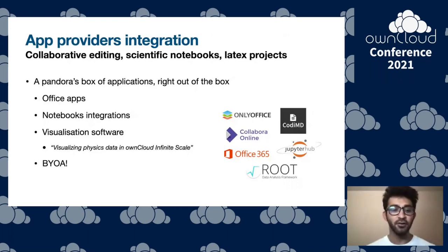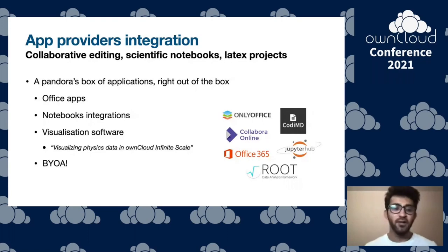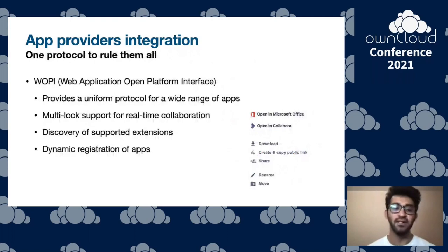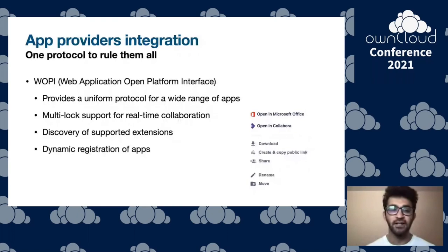A colleague of mine, Jan Maria, has also worked on integrating ROOT.js with OSIS, which allows visualizing and making sense of physics data. If you missed this presentation from the workshop yesterday, please check it out once it's uploaded. You can just bring your own app — we made it ridiculously easy to write bindings for new applications. This is due to a uniform protocol for editing apps called WAPI and its implementation, which we've developed here at CERN. WAPI stands for Web Application Open Platform Interface, and it provides a universal set of APIs to connect to a range of editing apps. We already have a few apps in production at CERNBox and are working on integrating new ones, including Etherpad and in the future maybe even LaTeX IDEs.